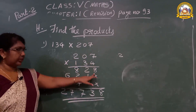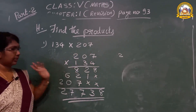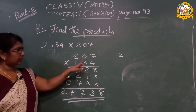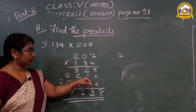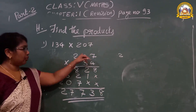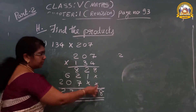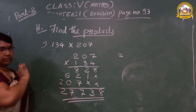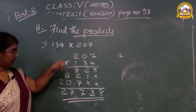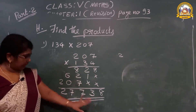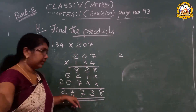Rechecking: 4 × 7 = 28, carry 2. 4 × 0 = 0, plus 2 = 2. 4 × 2 = 8. Then multiplied by 3: put cross sign in 1s place. 3 × 7 = 21, carry 2. 3 × 0 = 0, plus 2 = 2. 3 × 2 = 6. Now multiply by 1 in 1s place and 10s place: 7 × 1 = 7, 0, 2 × 1 = 2. Then add it. Our answer is 27,738.